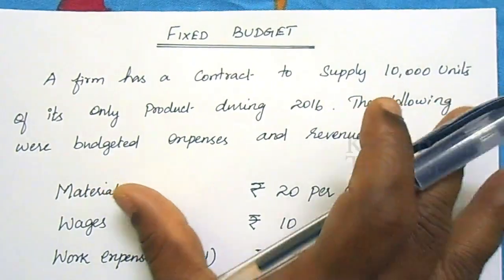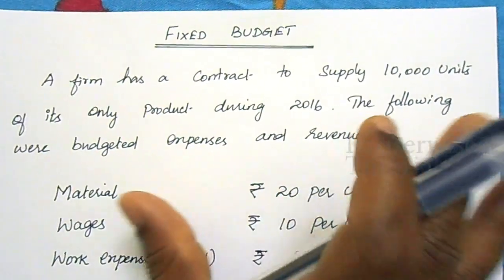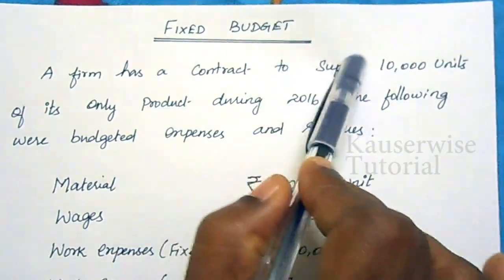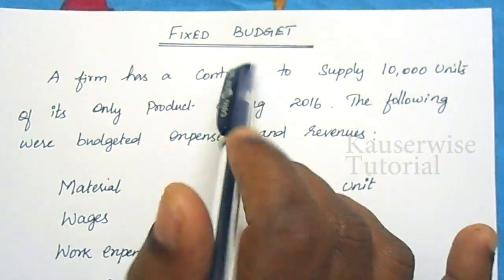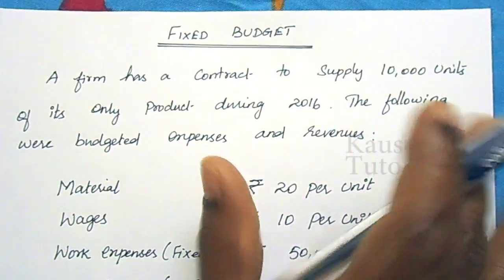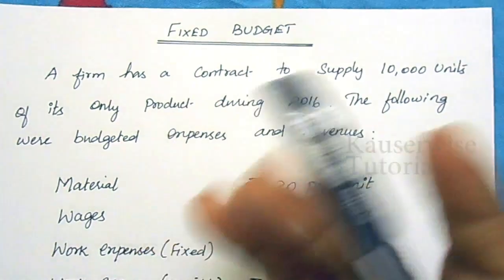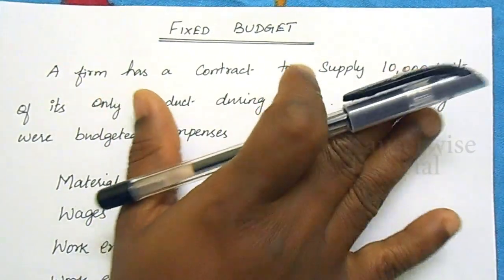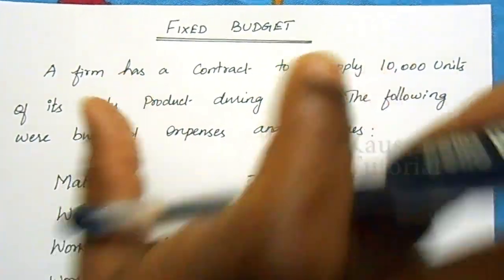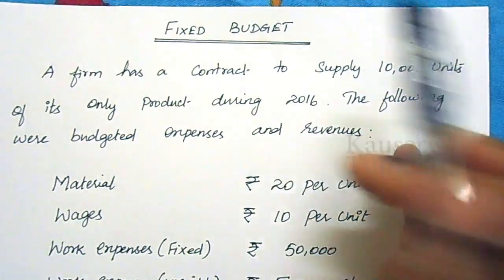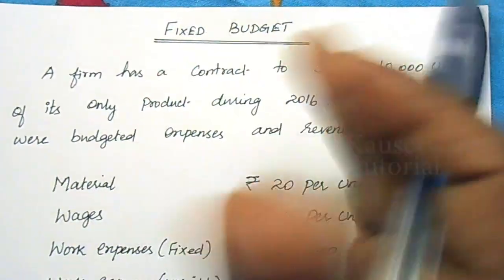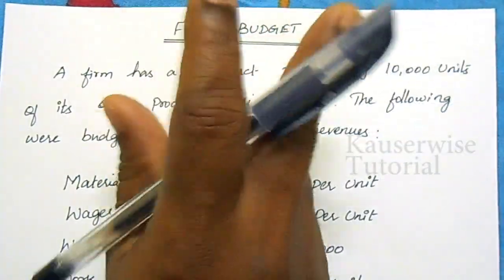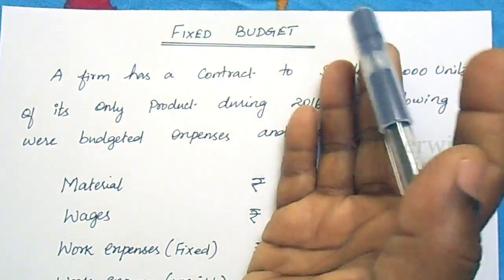In this video I am going to explain fixed budget. Fixed budget means it is a budget which is designed to remain unchanged — fixed in nature — irrespective of the level of activity actually attained. This particular budget is prepared for a particular level of activity; if the actual level is different, the budget is not adjusted in future.